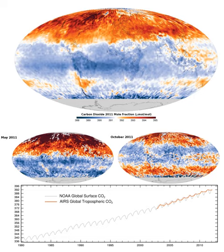In addition to greenhouse studies, field and satellite measurements attempt to understand the effect of increased CO2 in more natural environments. In free air carbon dioxide enrichment (FACE) experiments, plants are grown in field plots and the CO2 concentration of the surrounding air is artificially elevated. These experiments generally use lower CO2 levels than greenhouse studies and show lower gains in growth. A 2005 review of 12 experiments at 475–600 ppm showed an average gain of 17% in crop yield.